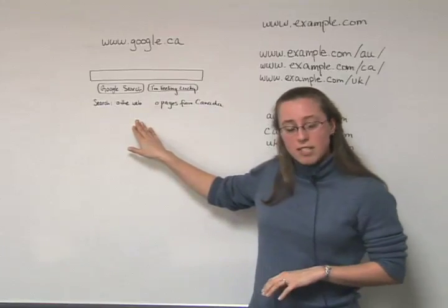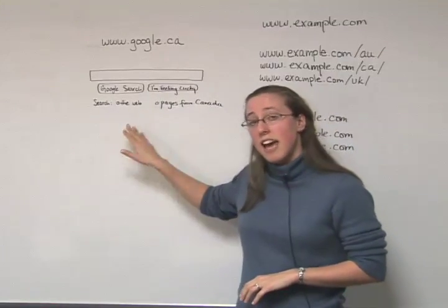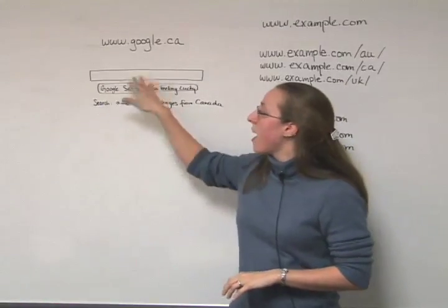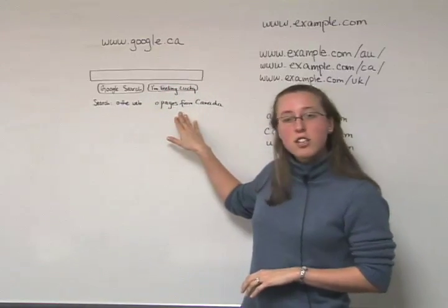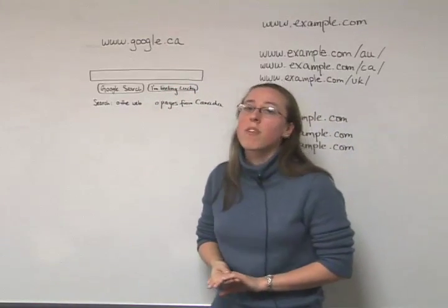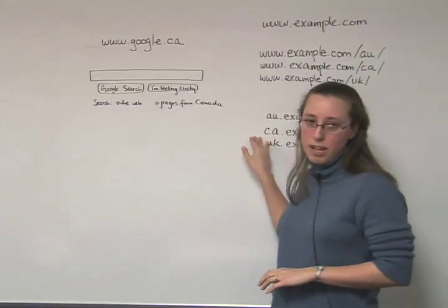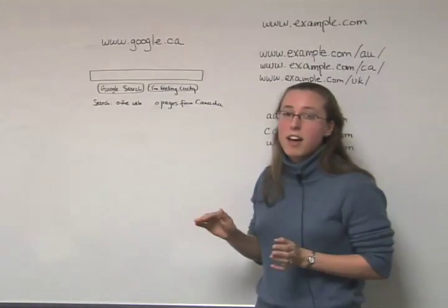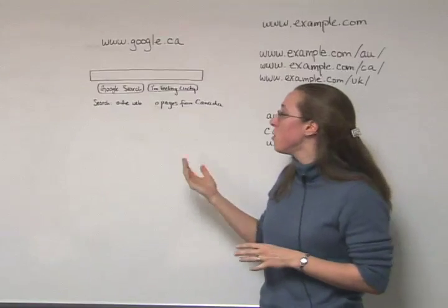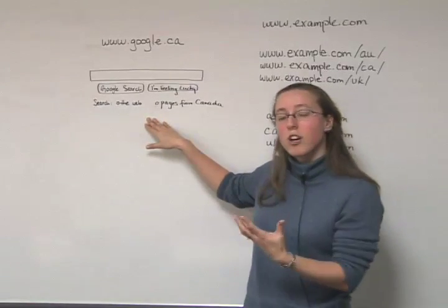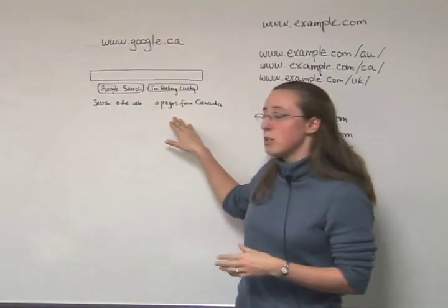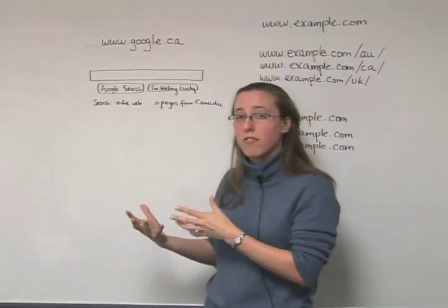So a couple examples of what actually happens once you've geo-targeted your website. Here's an example. Say I was searching on Google.ca, which is Google Canada, and I entered my query here and then I selected the search only pages from Canada option. If you had geo-targeted the CA subdomain of your website to Canada, it would be more likely for us to return that result in the Canadian search results because we know that this is a page that is relevant to Canada.